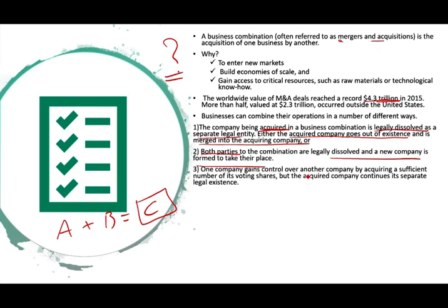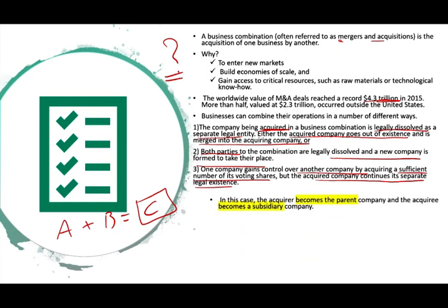Or, one company could gain control over another by acquiring sufficient voting shares, but the acquired company continues as a separate legal entity. Once you buy more than 50% of their shares, you are in control. In either case, the acquirer is the parent company — the company that's buying — and the acquiree is called the subsidiary.